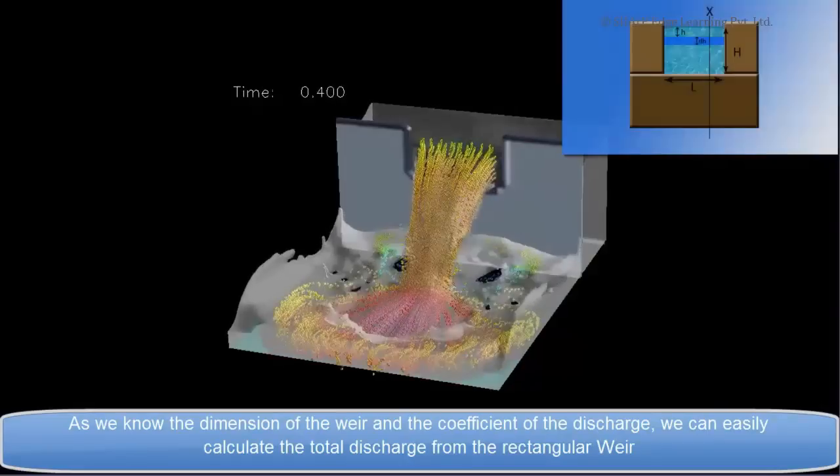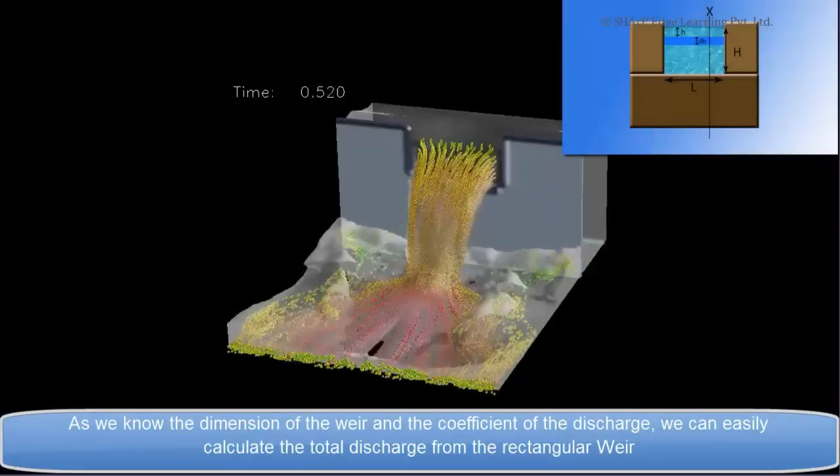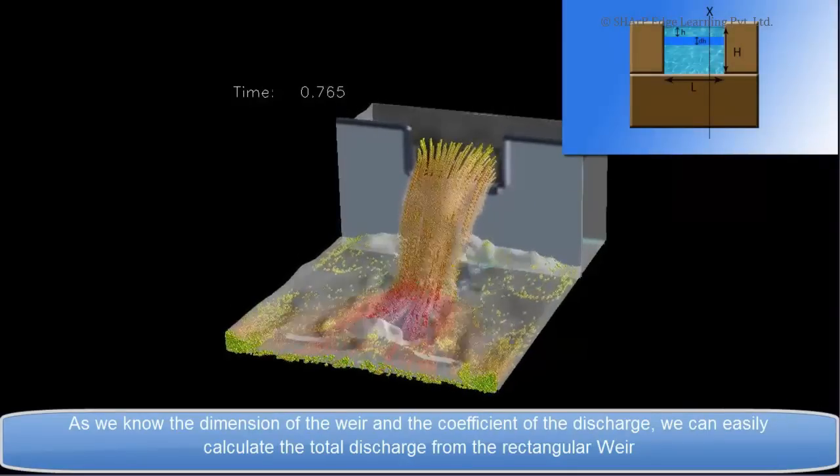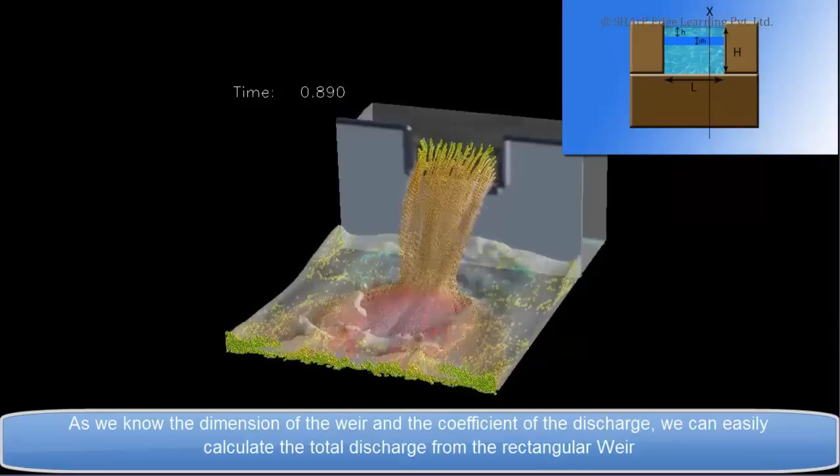As we know the dimension of the weir and the coefficient of the discharge, we can easily calculate the total discharge from the rectangular weir.